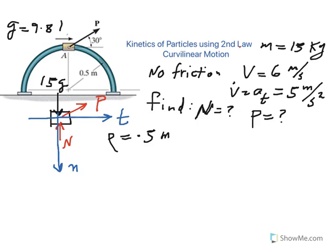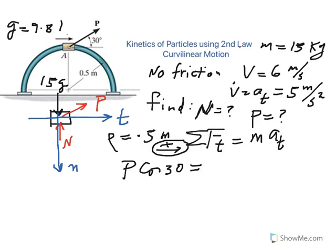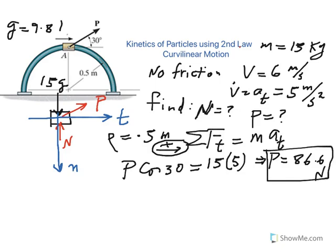Alright, so basically we're going to apply two equations here. One equation is in the T direction. So we say sum of the forces in the T is equal to mass times tangential acceleration. It's good to start with this equation because that will give us right away the value of P. The component of P along the T axis is P cosine 30, and that's it. No other force. The weight and N are in the normal direction. Equal to mass which is 15 kilograms times the tangential acceleration which is that V dot. So we go ahead and solve for P here and P happens to be 86.6 newtons.